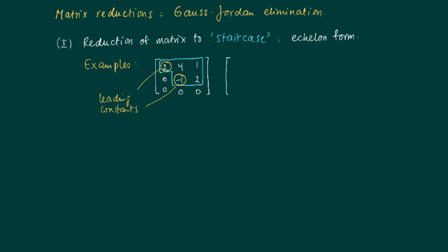Another example of such a reduced matrix has the same kind of staircase structure, with two leading elements — two leading constants — which are both one.